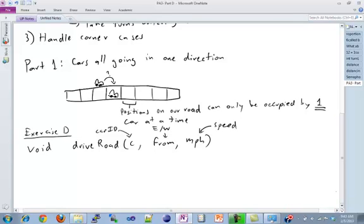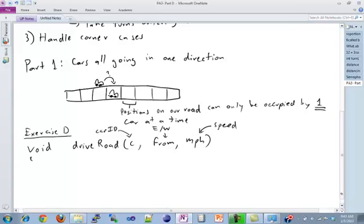And this method takes care of getting a car from the beginning to the end of the road. When they call drive road, they drive through the whole road. In the middle there's a loop, and this loop's job is to go through all positions in the road. This part is all given to you. The code I'm writing is all already there, I'm just explaining what it's doing.